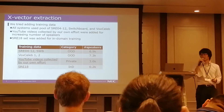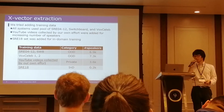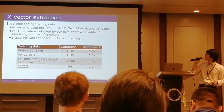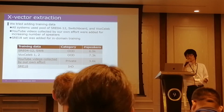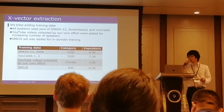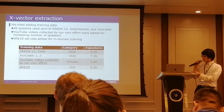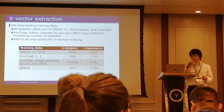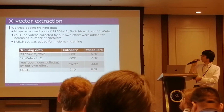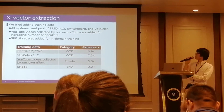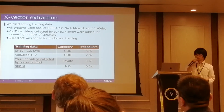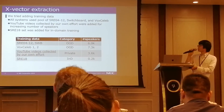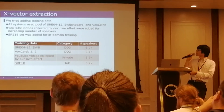We also tried adding training data. All systems use a pool of previous SRE data, Switchboard data, and VoxCeleb. In addition, we collected YouTube video data following the VoxCeleb procedure. Even if this is still out-of-domain data, by increasing the number of speakers we expect the neural network can improve. We also tried adding SRE18 evaluation data for X-vector training, because this is in-domain data for this year. So we pooled the SRE18 data together with a large amount of out-of-domain data to train the neural network.